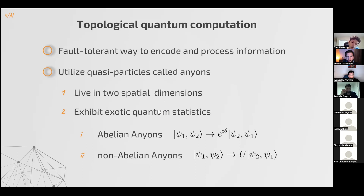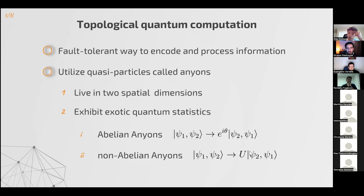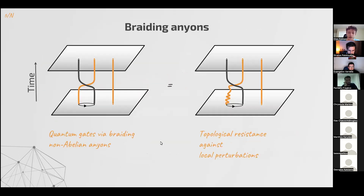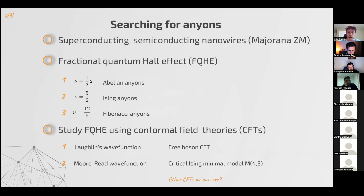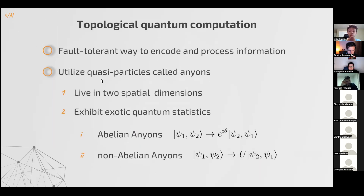We have two types of anyons. [Audience question: Do you know if anyons have been experimentally observed?] Yes, they have been — for instance, in the fractional quantum Hall effect at filling 1/3. However, we don't have clear evidence yet for non-abelian anyons.